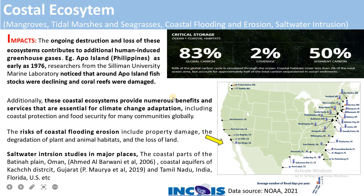These benefits include coastal protection — absorbing wave energy and water energy when huge waves, tides, sea level rise, or floods come — and food security for many communities globally. The risks of coastal flooding and erosion include property damage, degradation of plant and animal habitats, and loss of land. Erosion also causes infrastructure damage and loss of marine habitat.